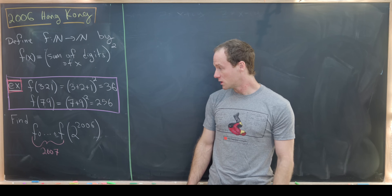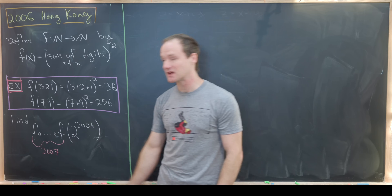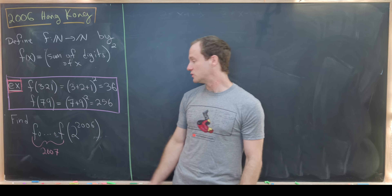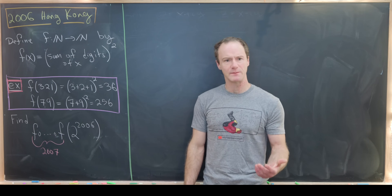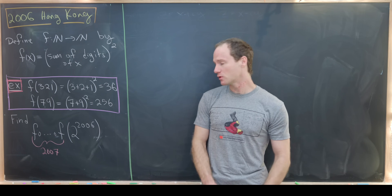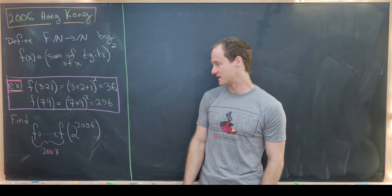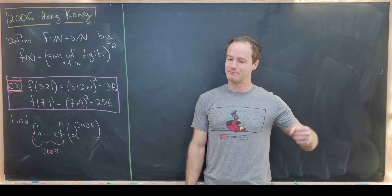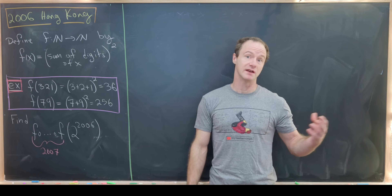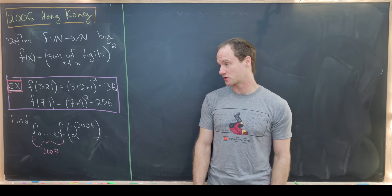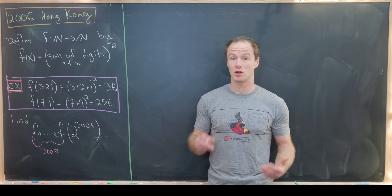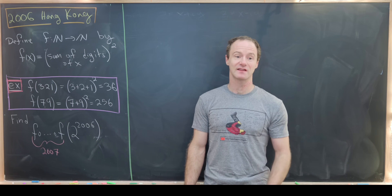Our final goal will be to calculate f composed with itself 2007 times, evaluated at 2 to the 2006. A typical strategy for problems like this, where you apply some function that makes an object smaller and smaller down to a certain point, is to first make some approximations until you've reduced it to working with smaller numbers. That's exactly how we're going to start.